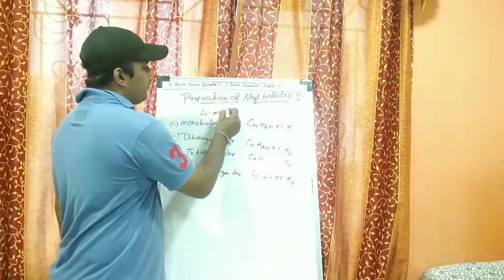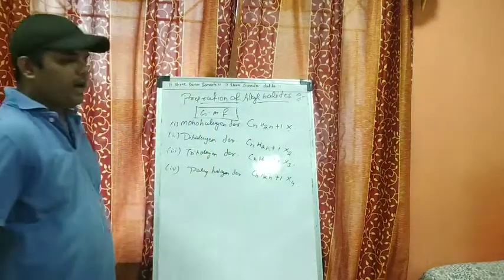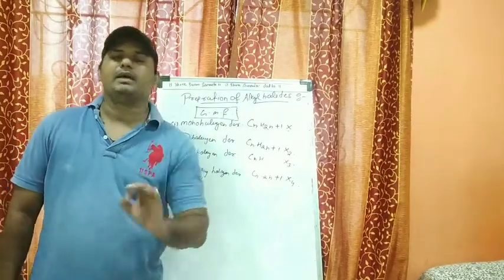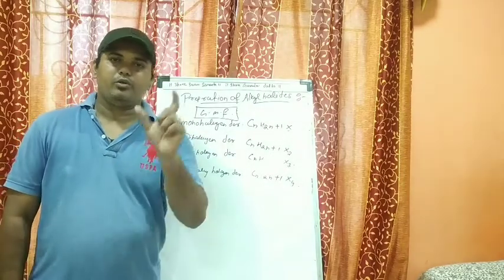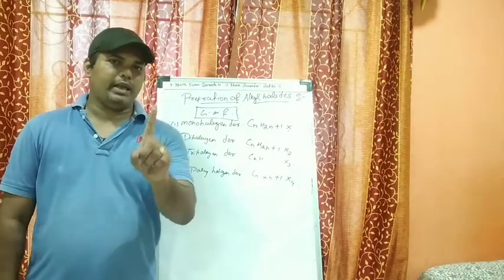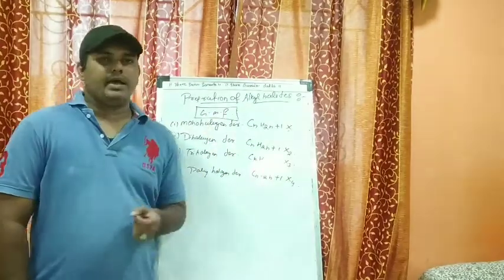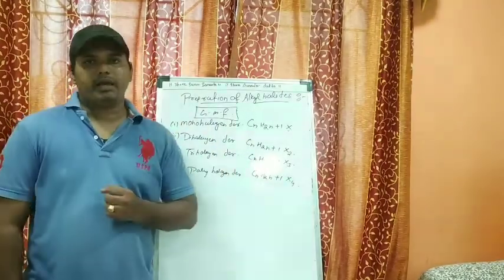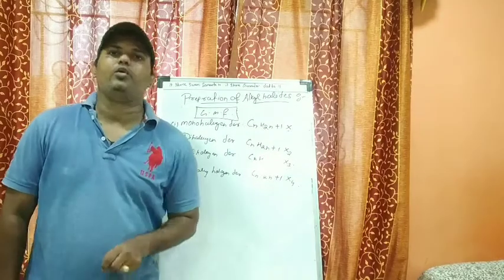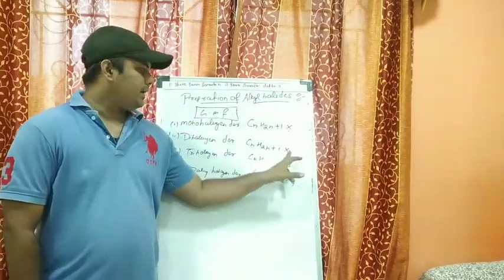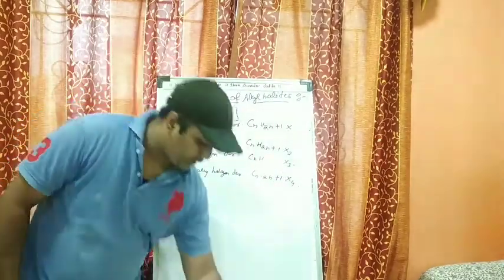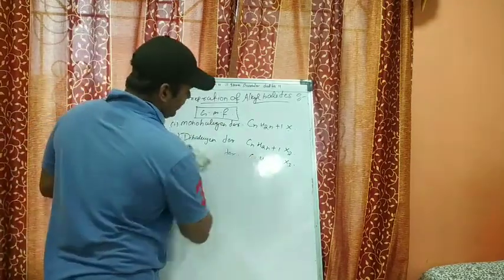This question on general molecular formula can be asked in the MCQ part of your board exam. As per the new paper pattern, there are 10 MCQs and 8 short-answer questions. The key thing to remember is X: it represents the number of halogen atoms — X, X₂, X₃, and X₄ — while the rest remains CₙH₂ₙ₊₁. Please note this down.